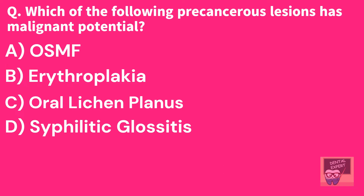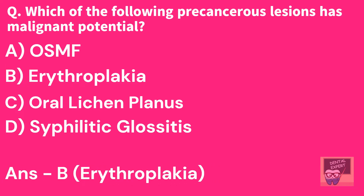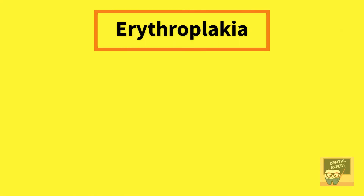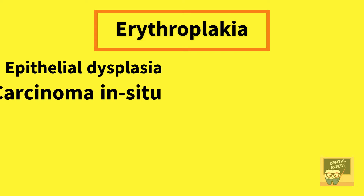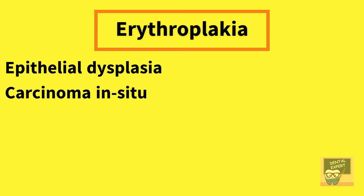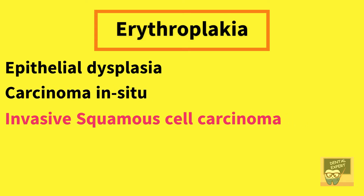The answer of this question is option B, that is, erythroplakia. Almost all true erythroplakias demonstrate significant epithelial dysplasia, carcinoma in situ, or invasive squamous cell carcinoma.